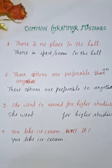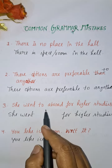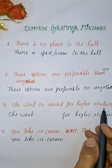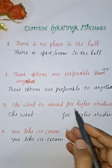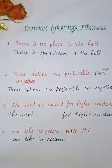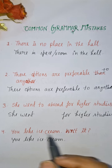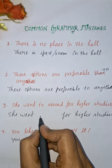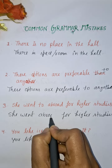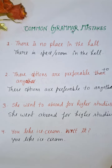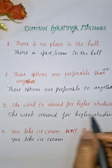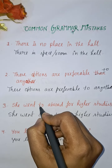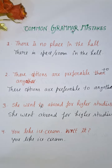Next: 'She went to abroad for higher studies.' This is incorrect. 'Abroad' is not a place name like China or America, so we do not use 'to' before it. The correct sentence is: 'She went abroad for higher studies.' We use 'to' with specific place names like Australia.